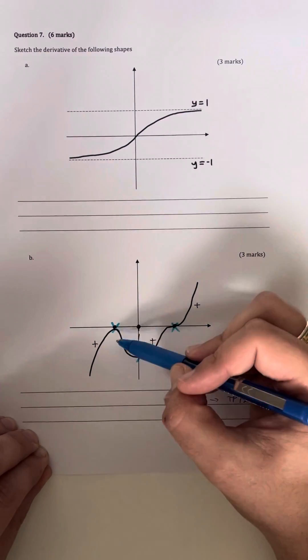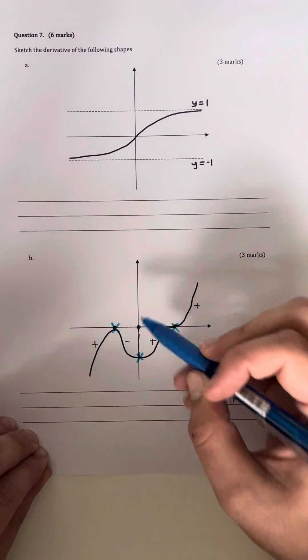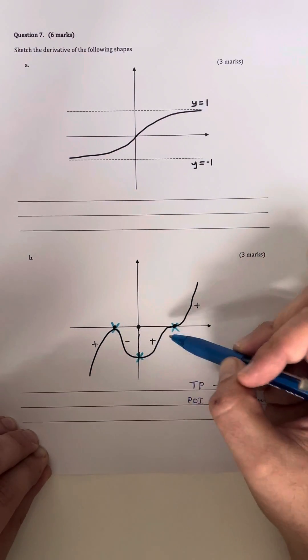The first thing that I do is I note down where the x-intercepts will be on my derivative. That'll be wherever I have a zero gradient on my original function.